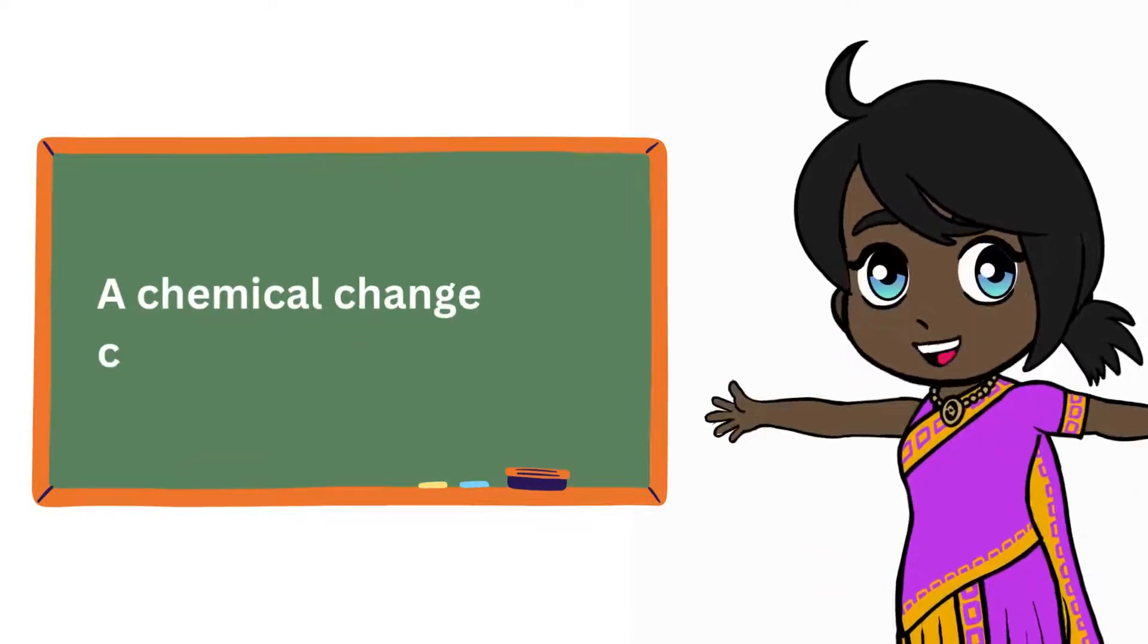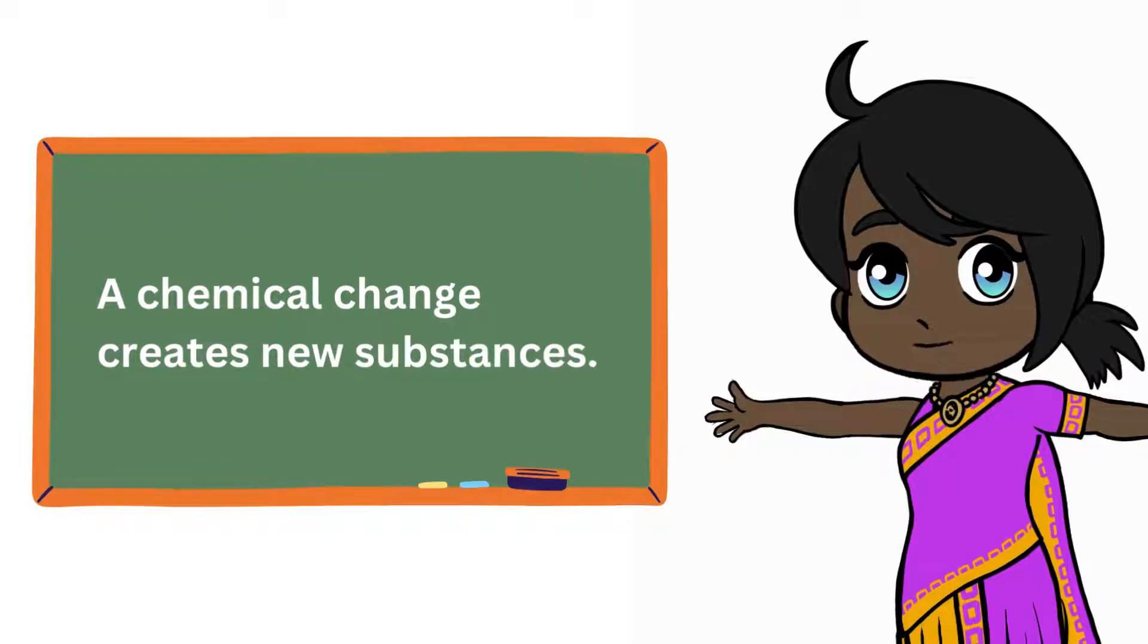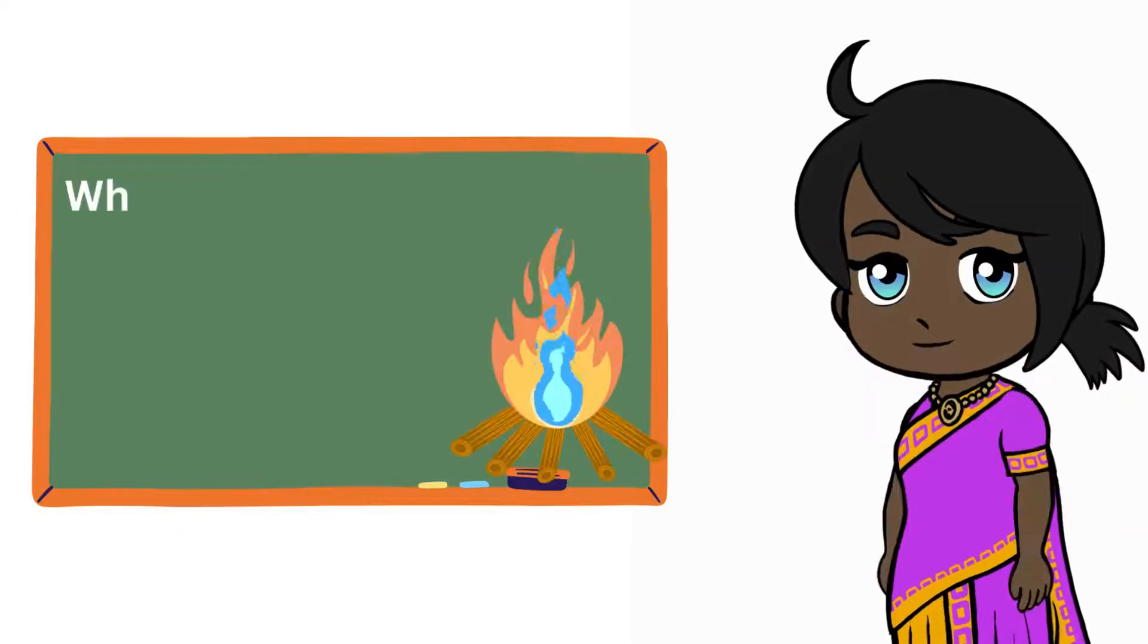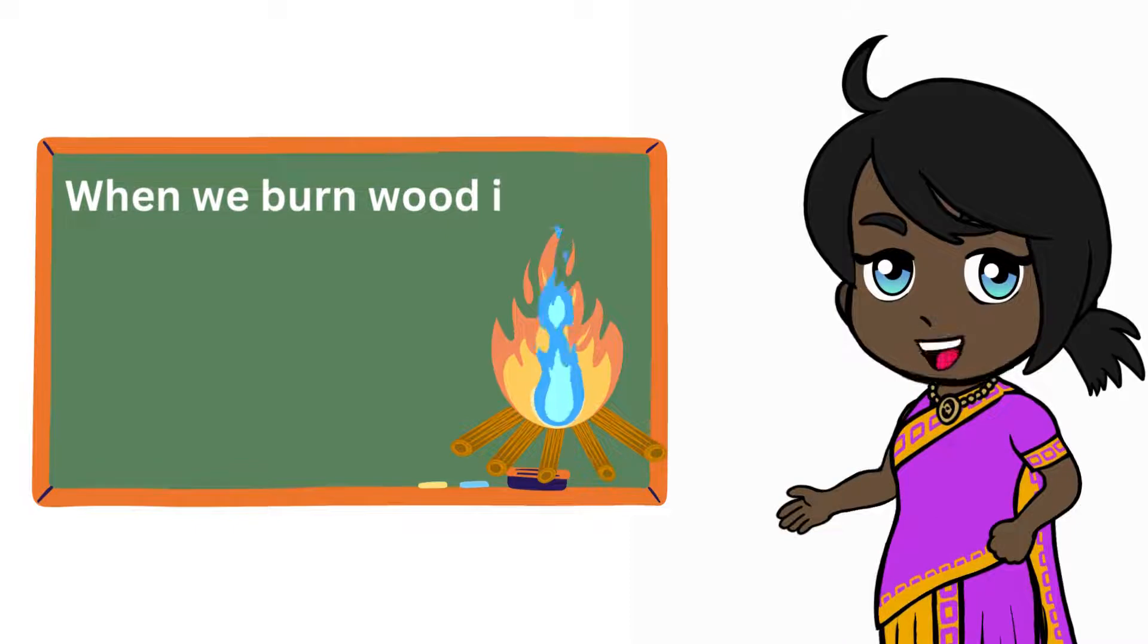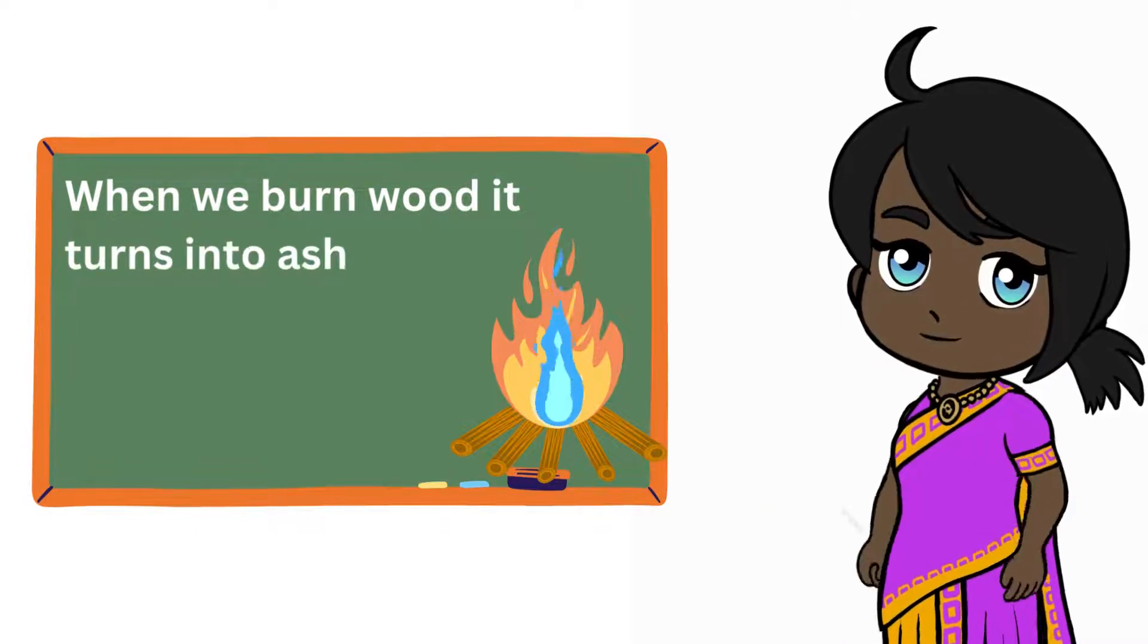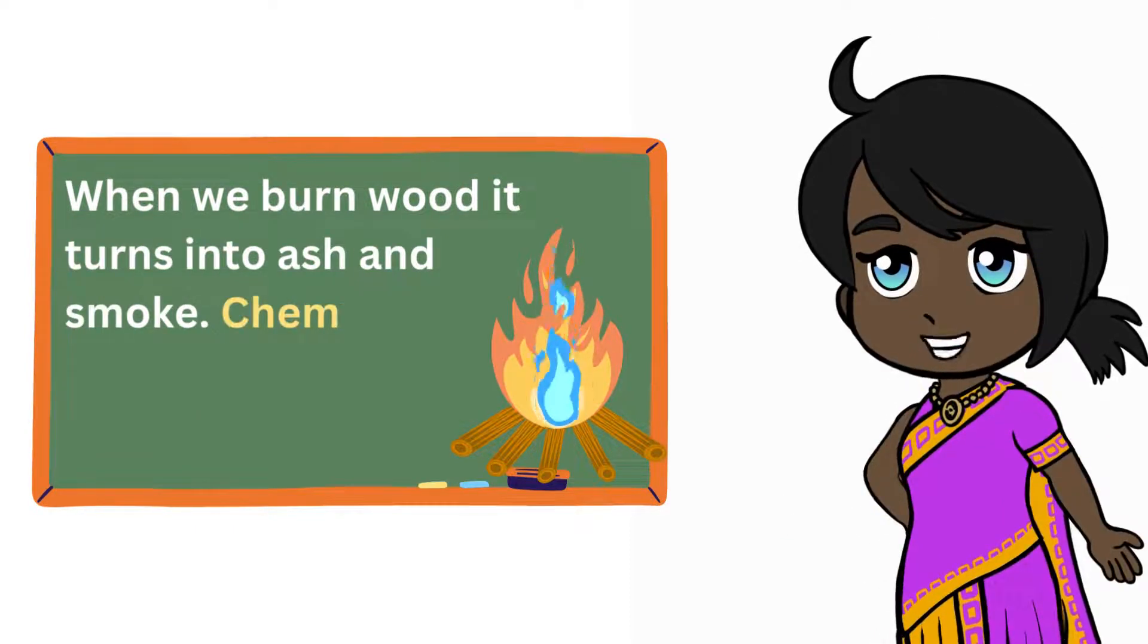Matter can also undergo a chemical change, which creates new substances. For example, when we burn wood, it turns into ash and smoke. This is a chemical change because the wood has changed into new substances.